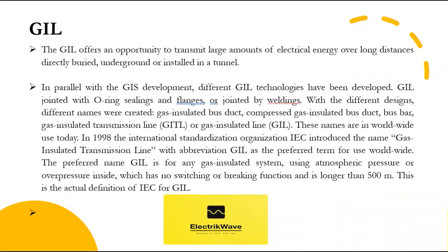The GIL offers an opportunity to transmit large amounts of electrical energy over long distances, directly buried, underground, or installed in a tunnel. Different GIL technologies have been developed, including GIL jointed with ring sealings and flanges, or jointed by welding. With the different designs, different names were created: gas insulated bus duct, compressed gas insulated bus duct, bus bar, gas insulated transmission line (GITL), or gas insulated line (GIL). In 1998 the International Standardization Organization IEC introduced the name 'gas insulated transmission line' with abbreviation GIL as the preferred term for worldwide use. The preferred name GIL applies to any gas insulated system using atmospheric pressure or overpressure inside, which has no switching or breaking function and is longer than 500 meters. This is the actual IEC definition of GIL.